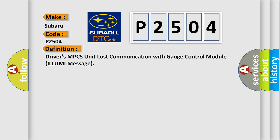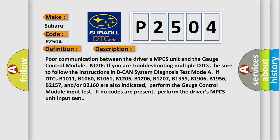Here is a short description of this DTC code: Poor communication between the driver's MPCS unit and the gauge control module. Note: if you are troubleshooting multiple DTCs, be sure to follow the instructions in B-CAN system diagnosis test mode. If DTCs B-1011, B-1060, B-1061, B-1205, B-1206, B-1207, B-1359, B-1906, B-1956, B-2157, and/or B-2160 are also indicated, perform the gauge control module input test. If no codes are present, perform the driver's MPCS unit input test.